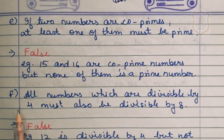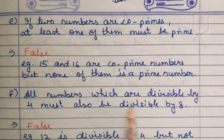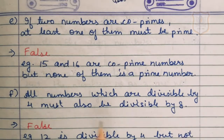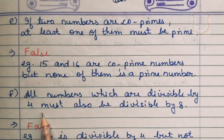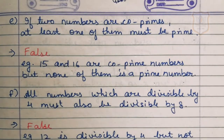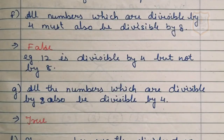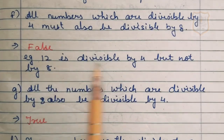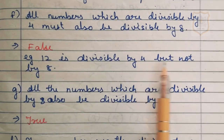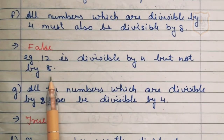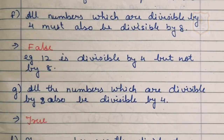Part F of question number 1: all numbers which are divisible by 4 must also be divisible by 8. If any number is divisible by 4, must it also be divisible by 8? The statement is false, because 12 is divisible by 4 but not by 8. So the statement is false.